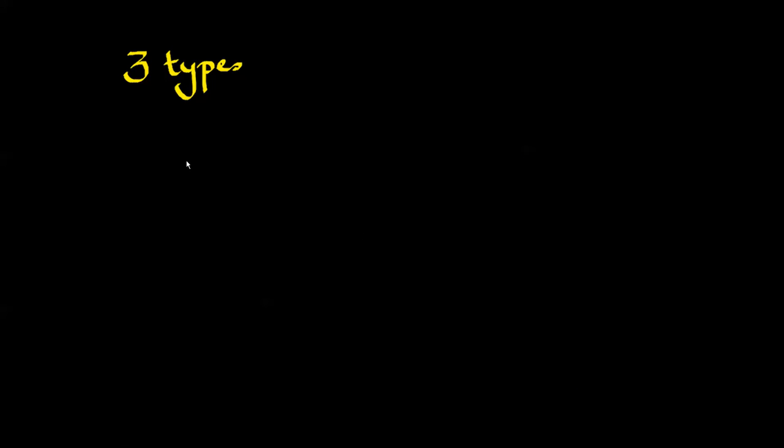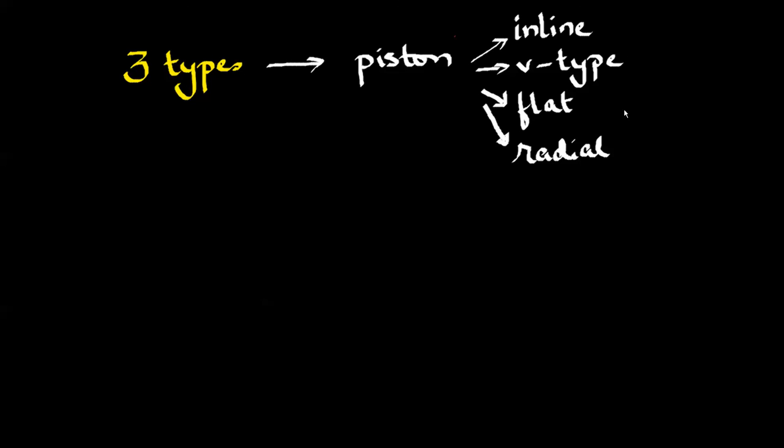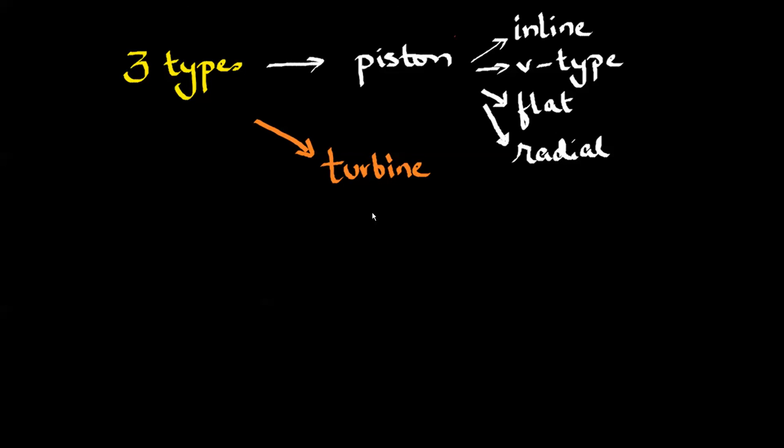So we've covered the basics behind three types of engines: piston, which contains these four main subtypes; turbine, which contains these four subtypes; and electrics, which currently have no subtypes.